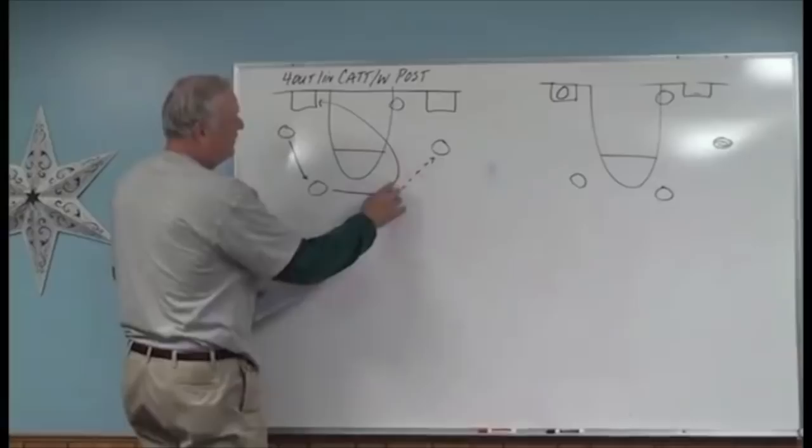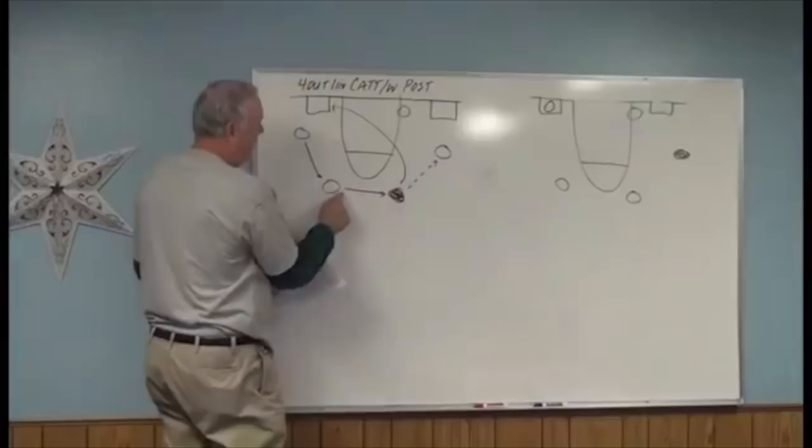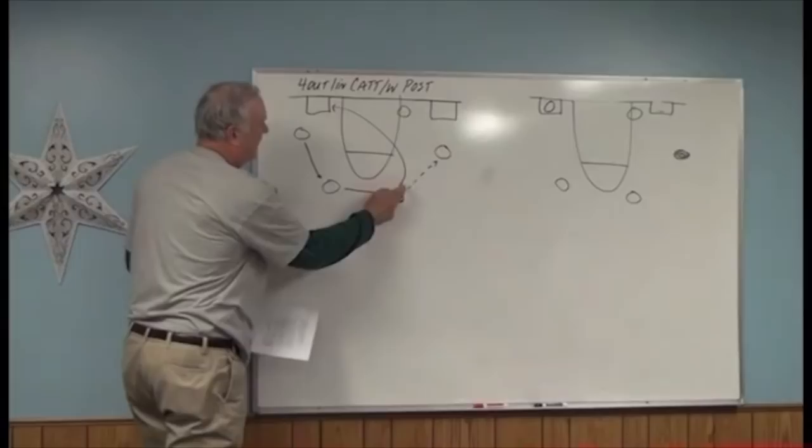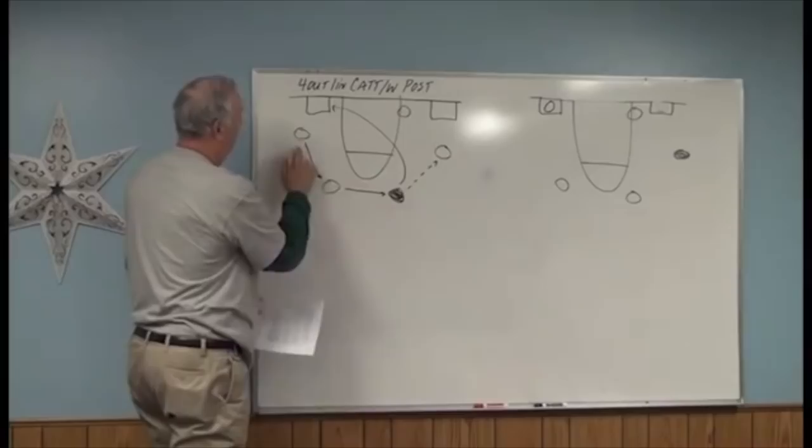As the passer takes a step, this player takes a step, and this player takes a step. The post stays where he belongs, and the ball receiver stays in position. So this player takes three steps — one, two, three — and this player takes three steps — one, two, three. The balance on the floor remains equidistant.